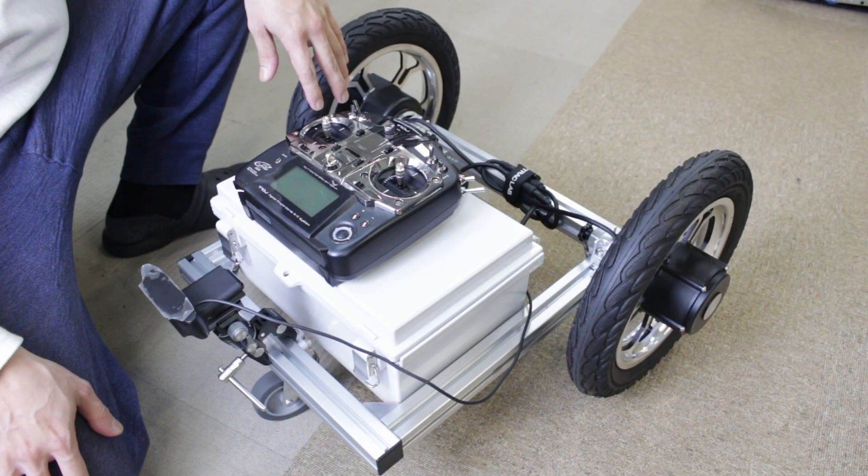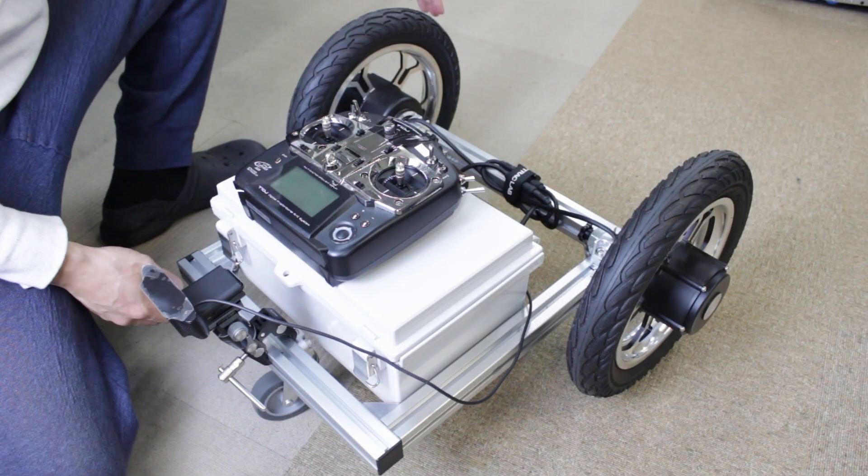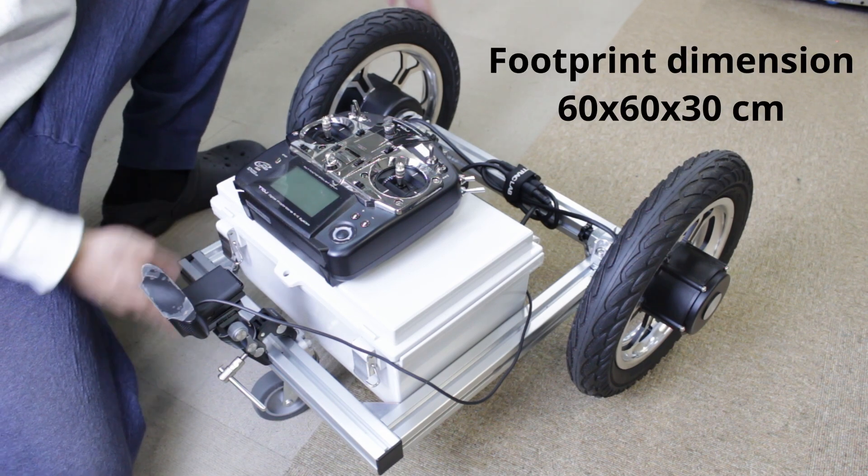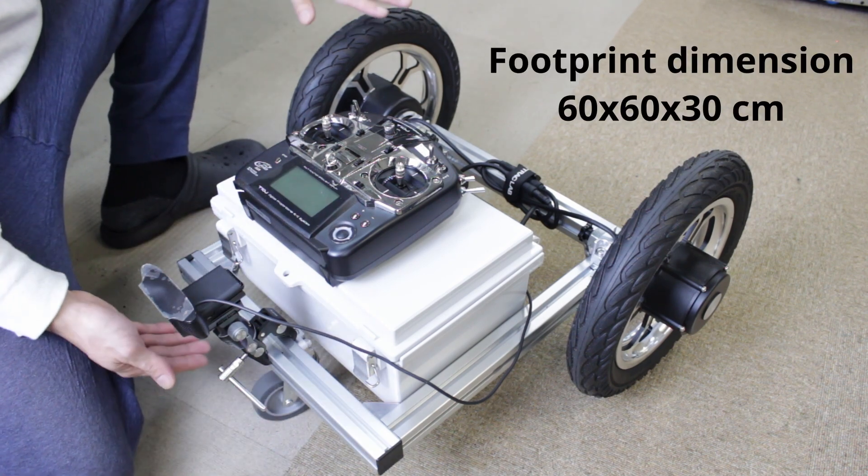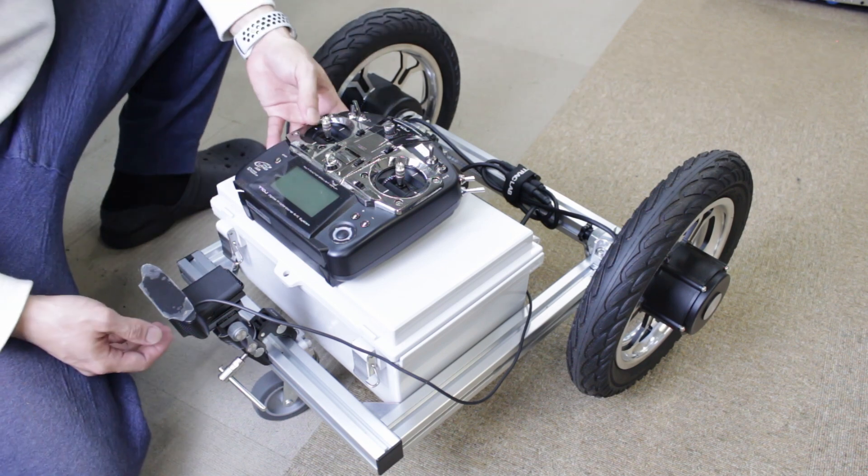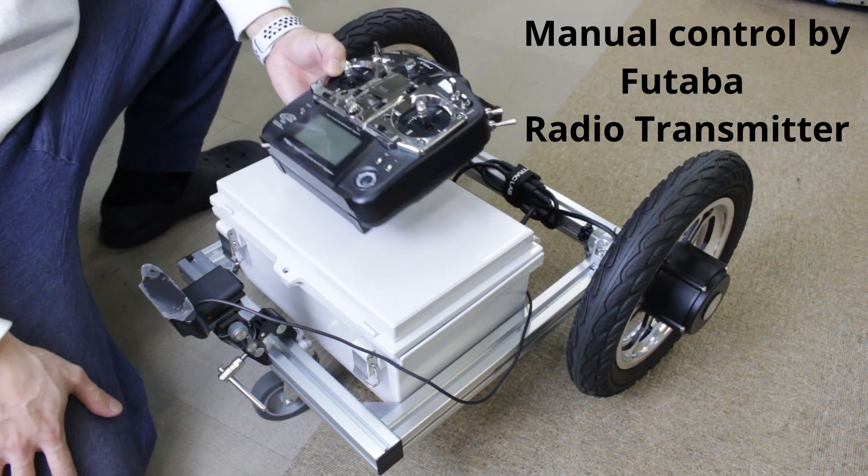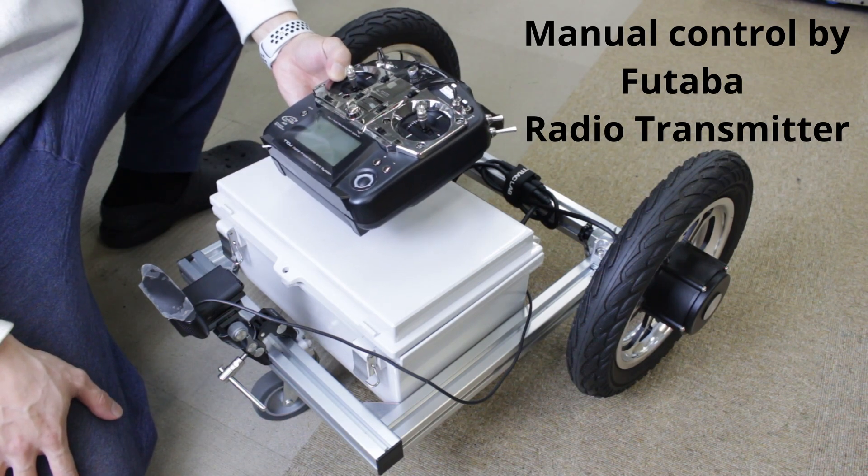Here is our standard AT Card Basic system. The overall dimension of this AT Card is 60 by 60 centimeter and the height is 30 centimeter. You can control the robot with the Futaba controllers or any radio controller which has S-Bus.